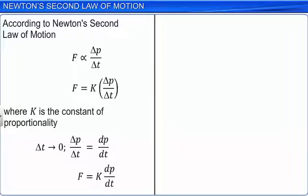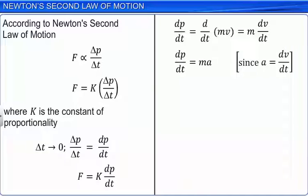Substituting P equals MV in dP by dT, we get dP by dT equals d by dT of MV, which equals M dV by dT or MA, since acceleration A is the rate of change of velocity V. Therefore, F equals KMA defines Newton's second law of motion.